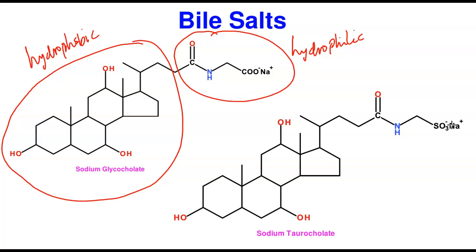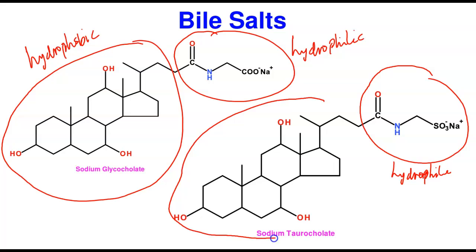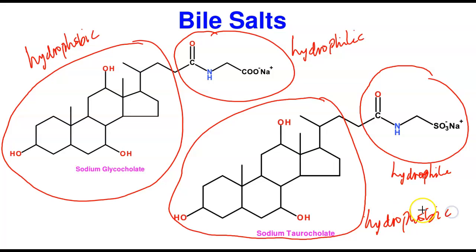You should be able to identify the hydrophilic and hydrophobic areas of both bile salts. The ionic polar group is the hydrophilic region, and the remaining steroid ring side is the hydrophobic region. These are the two common bile acids you need to know for this class.